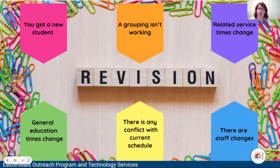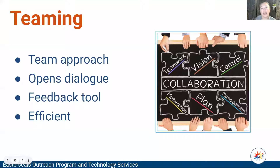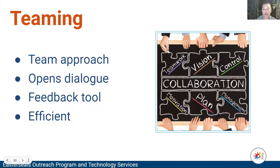If there are any staff changes — we know that sometimes we lose a staff member — that also needs to be updated. One thing that's really important is that your zoning plan matches what you're actually doing in the classroom on a regular basis. There are always unexpected circumstances that come up and we get off schedule, but in general your zoning plan should be a pretty clear picture of what's happening in the day. If it's not, then that's a good time to revise.